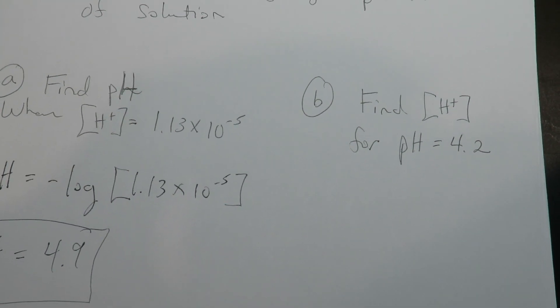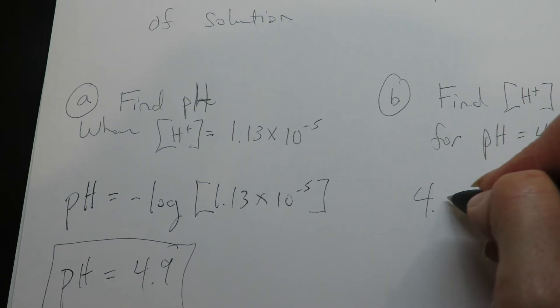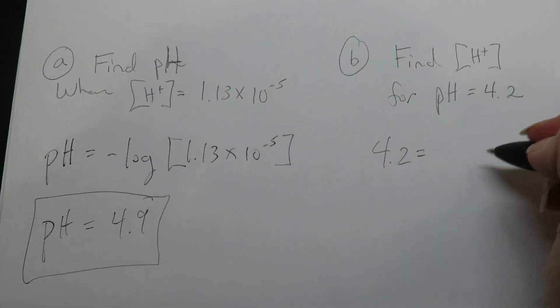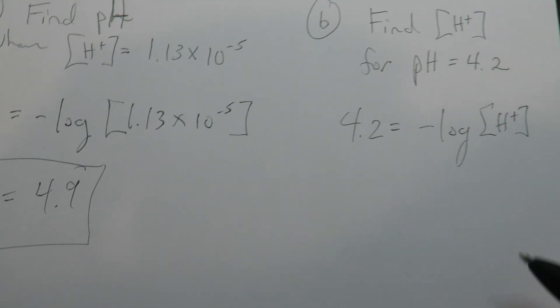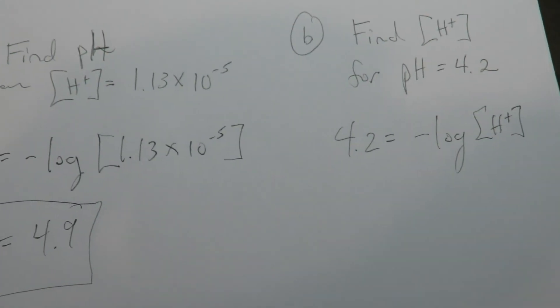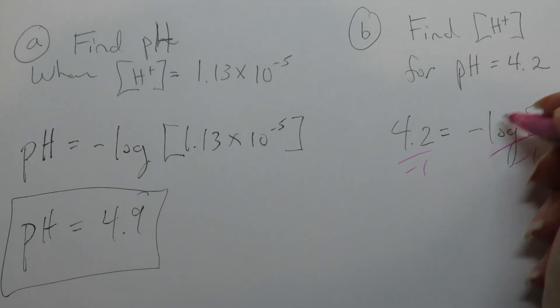Or likewise, you could find the hydrogen ion concentration. So let me show you how to do that. This is a little more difficult. 4.2 equals to negative log H+. So now you're looking for H+. So the first thing, whenever you solve for a log, is you've got to move the negative to the other side. Because you've got to isolate the log.